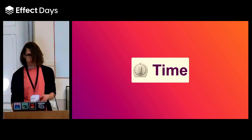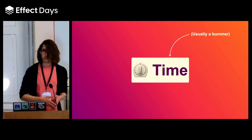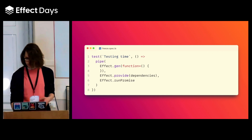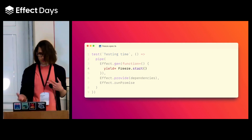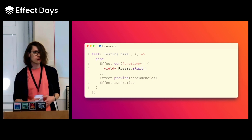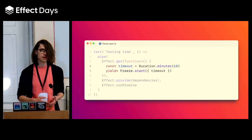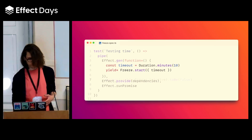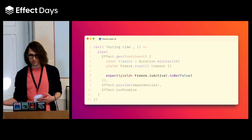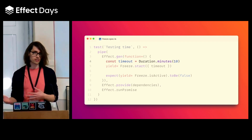Next recipe: manipulating time in tests, which is usually tedious — fortunately, not with Effect. New test, same structure again. This test focuses on the freeze service. Sometimes we have to stop or freeze the deployments of our application, and this is what we use. We start a freeze — start takes a timeout of a given duration, here 10 minutes. And we want to test that the freeze is no longer active after the given timeout. But how do we advance the clock 10 minutes to trigger that timeout?